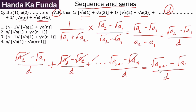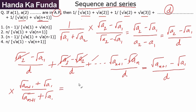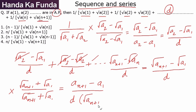To eliminate d, we rationalize again by multiplying both numerator and denominator by (√a(n+1) + √a1). Applying the (x + y)(x − y) identity in the numerator gives a(n+1) − a1, and the denominator becomes d·(√a(n+1) + √a1).